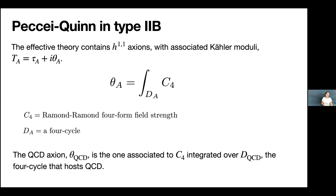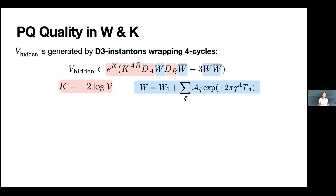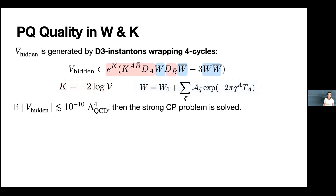V_hidden in this context is generated by Euclidean D3 branes wrapping 4-cycles in the manifold—it is part of the F-term potential. The Kähler potential K equals minus 2 times log of the overall volume, and the superpotential W has a constant flux piece plus a sum over instanton-generated terms. If V_hidden turns out to be less than 10^{-10} lambda_QCD^4, the strong CP problem is solved—and that's the condition we want to check.